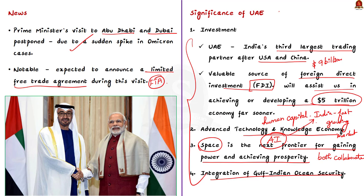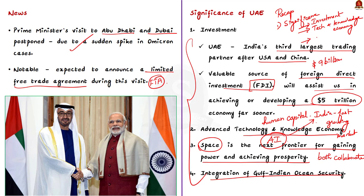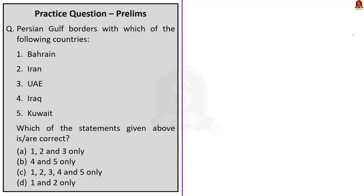In recap: UAE is India's third largest trading partner after the US and China, with investments surpassing $9 billion making it India's 10th largest FDI source. UAE is seen as a fast-growing market opportunity due to India's human capital. We also saw the significance of UAE in space cooperation and Gulf–Indian Ocean security.